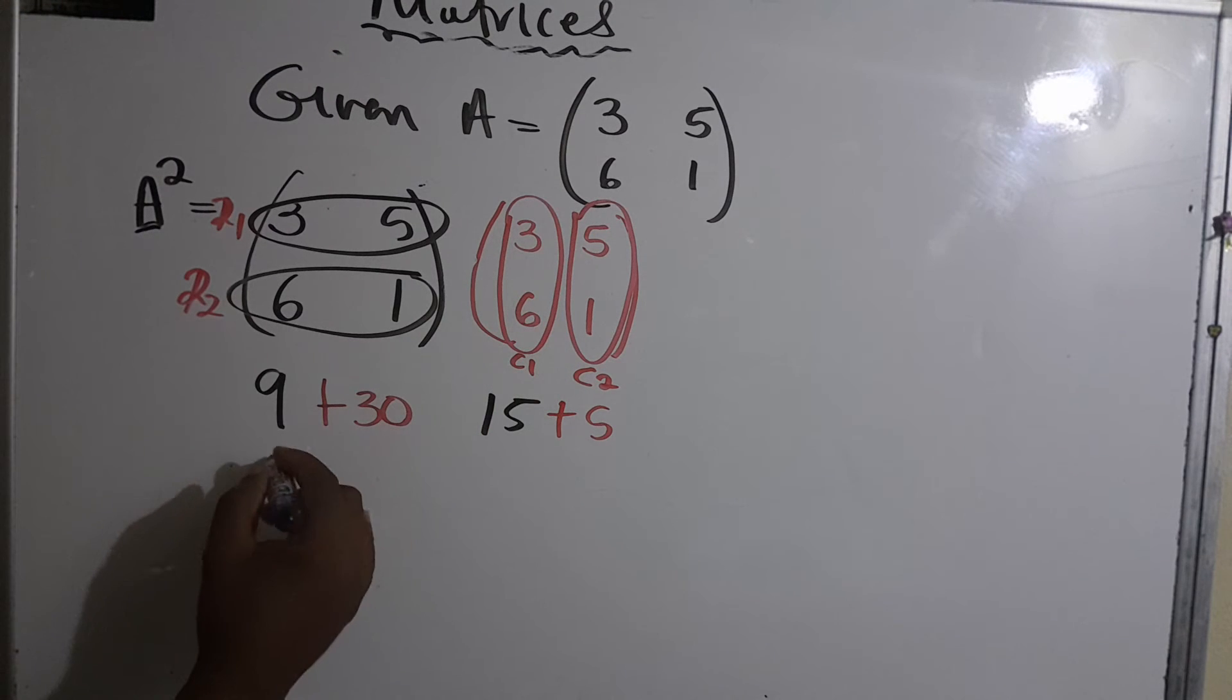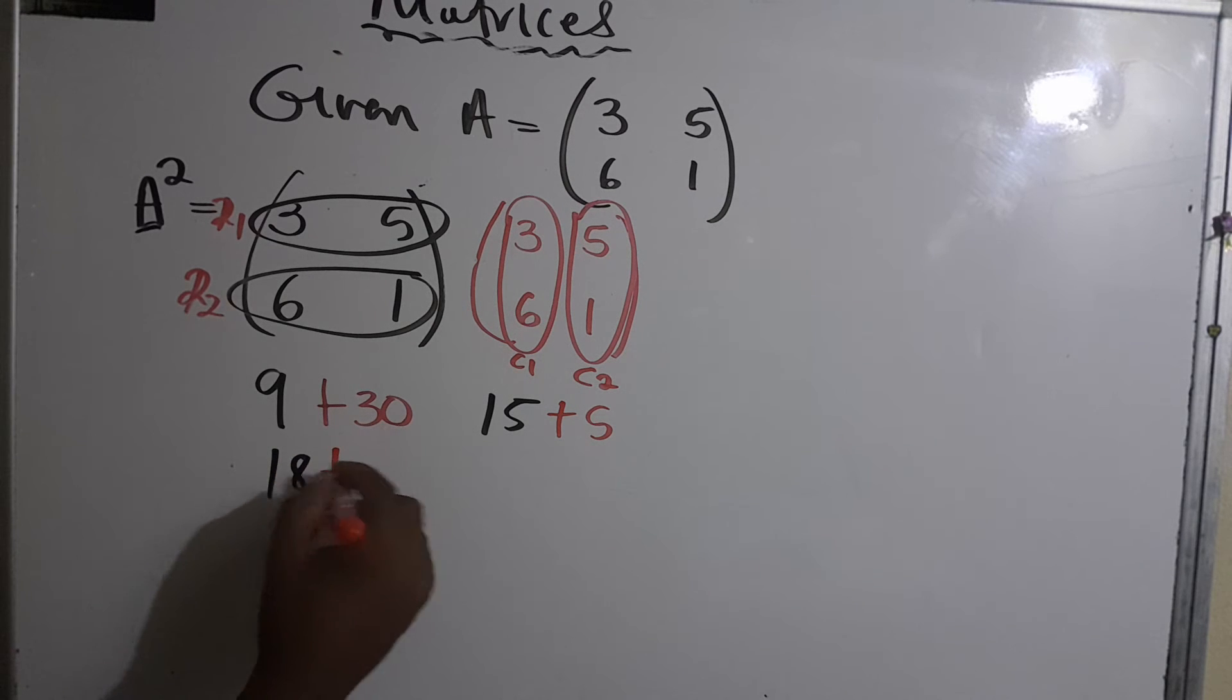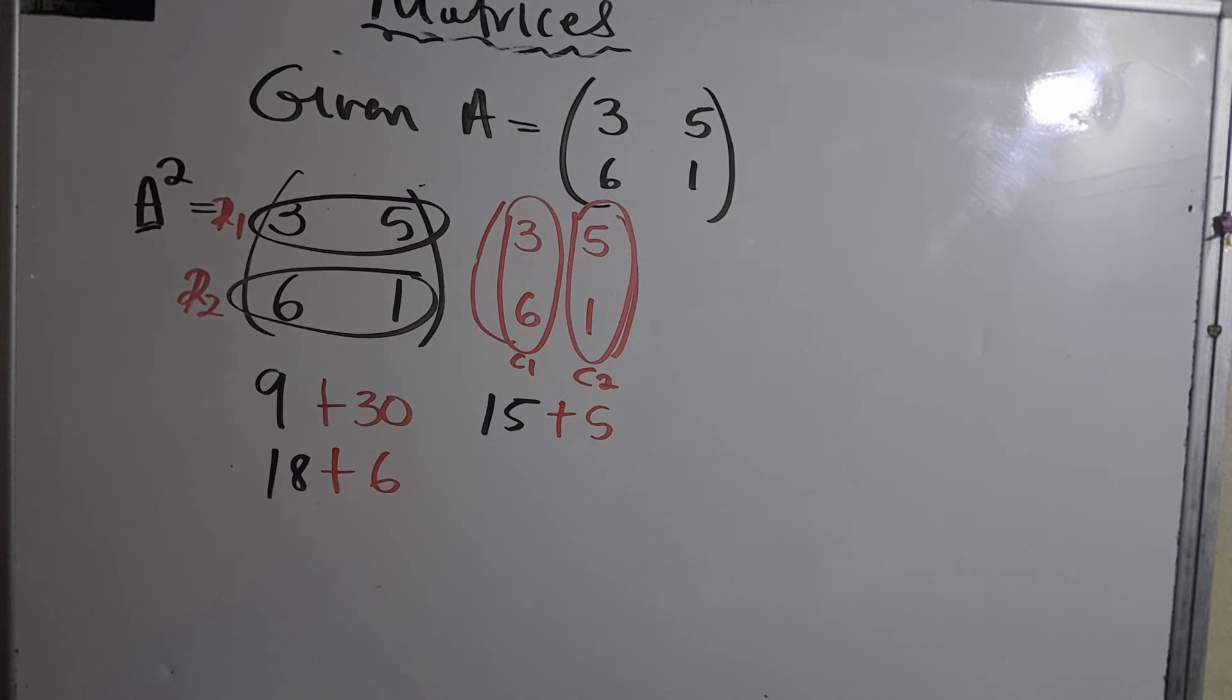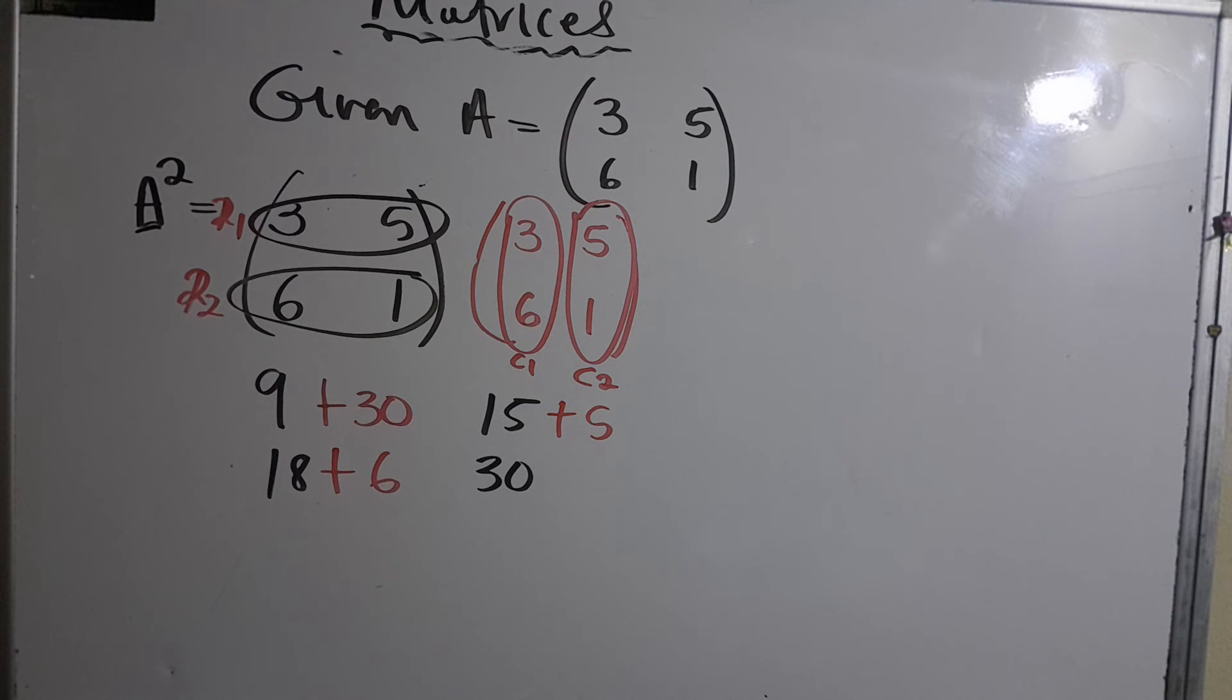And again, six times five which is 30, and one times one which is 1.